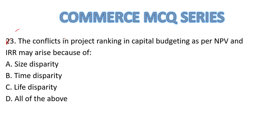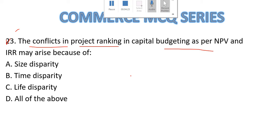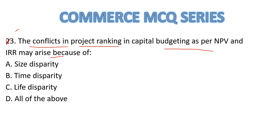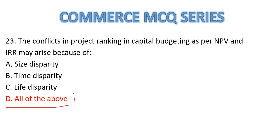Question Number 23: The conflicts in project ranking in capital budgeting as per NPV and IRR may arise because of: A — size disparity, B — time disparity, C — life disparity, or D — all of the above. The answer involves all of these — conflicts between NPV (Net Present Value) and IRR may arise because of size, time, and life disparity. So the answer is D, all of the above.